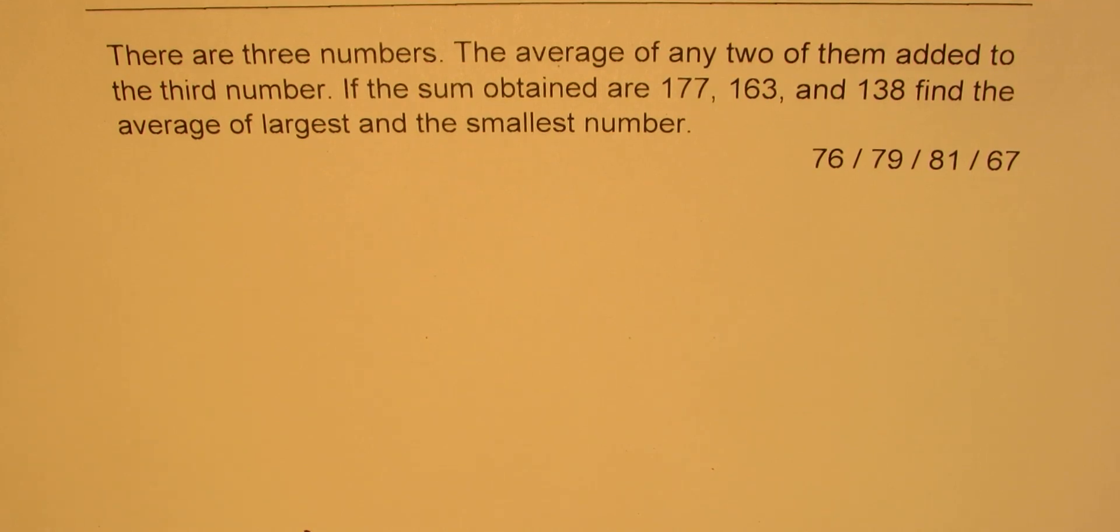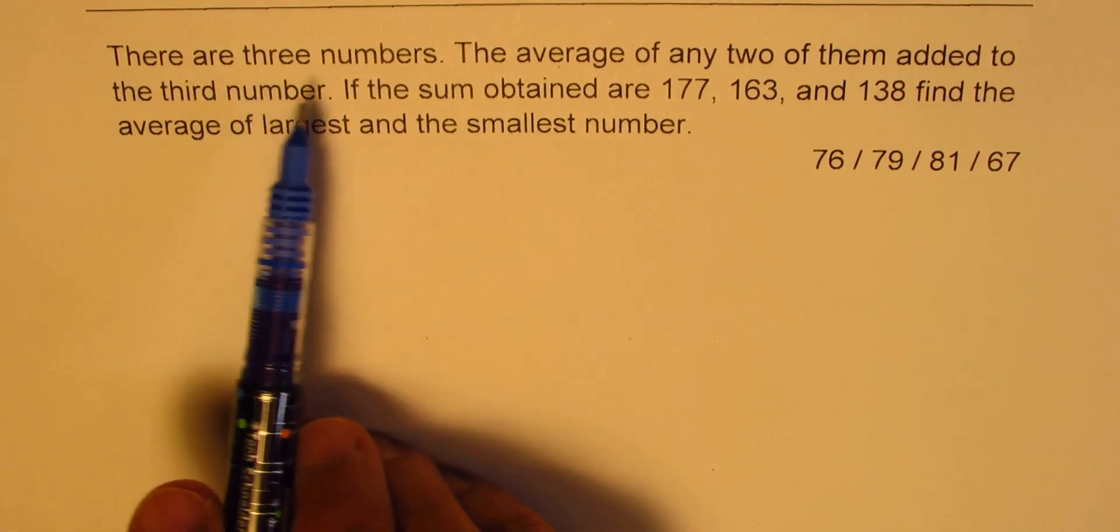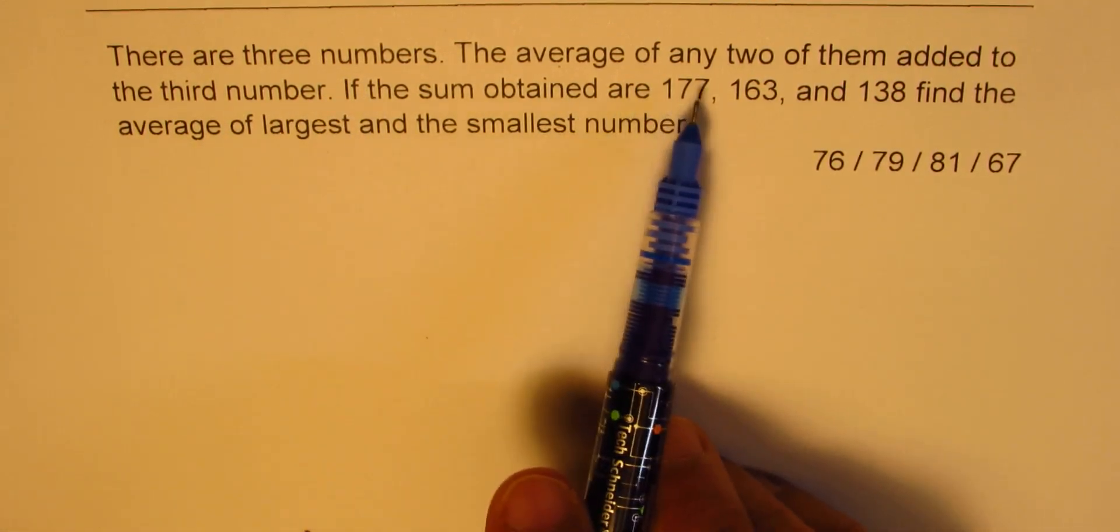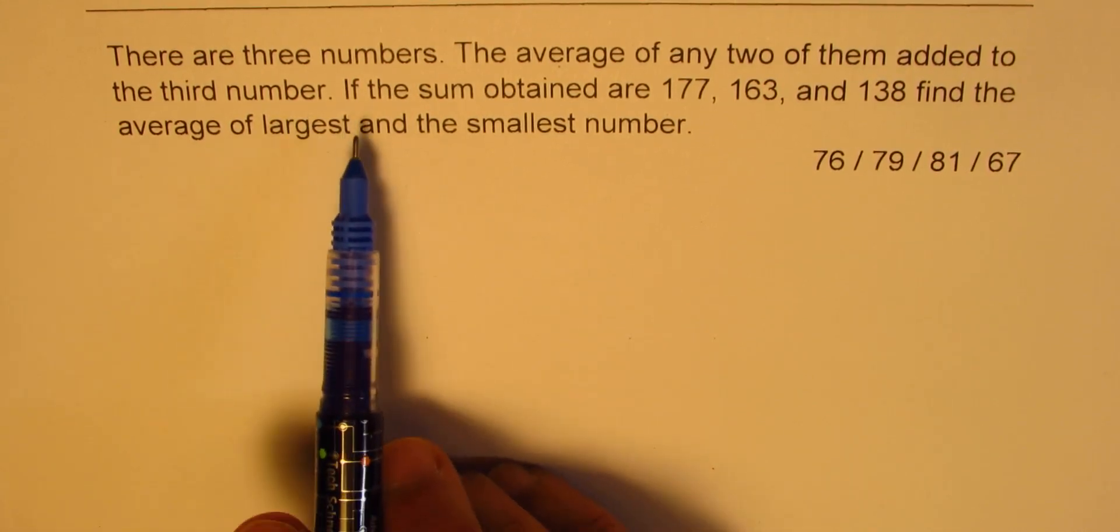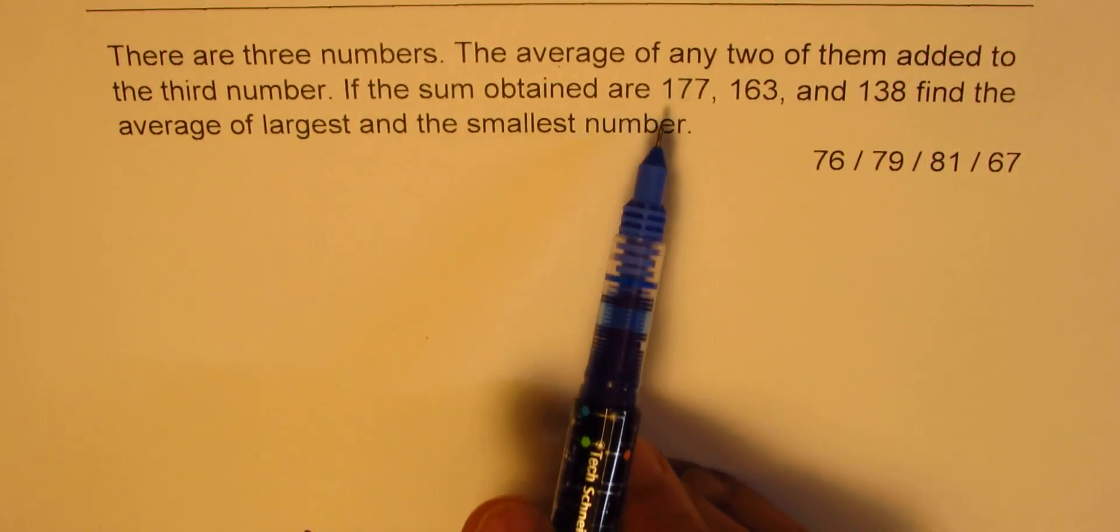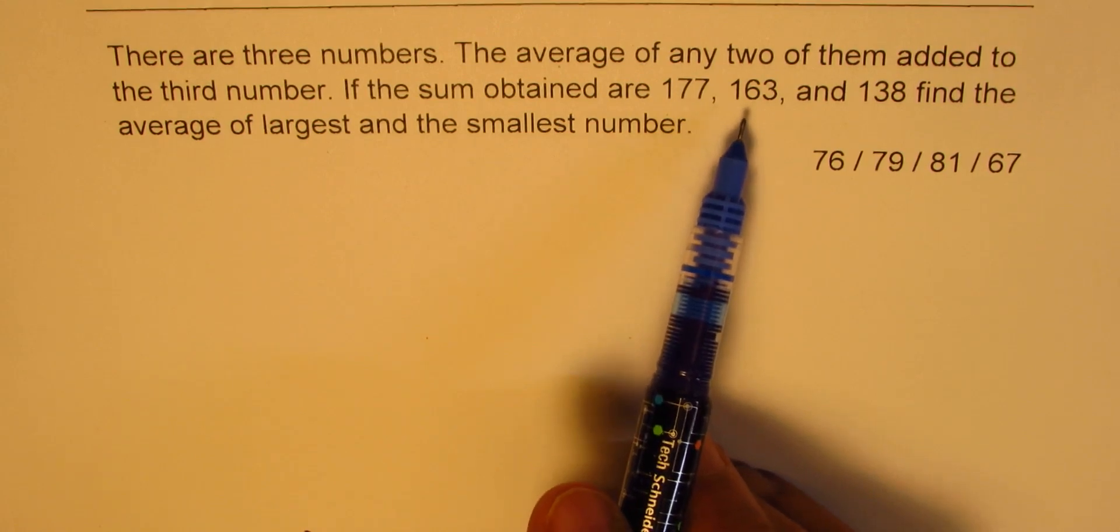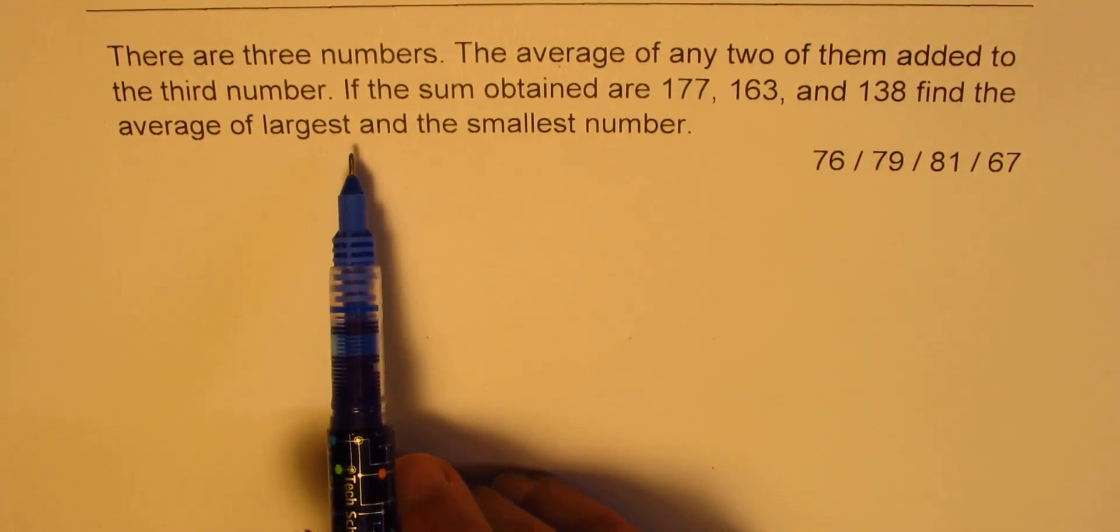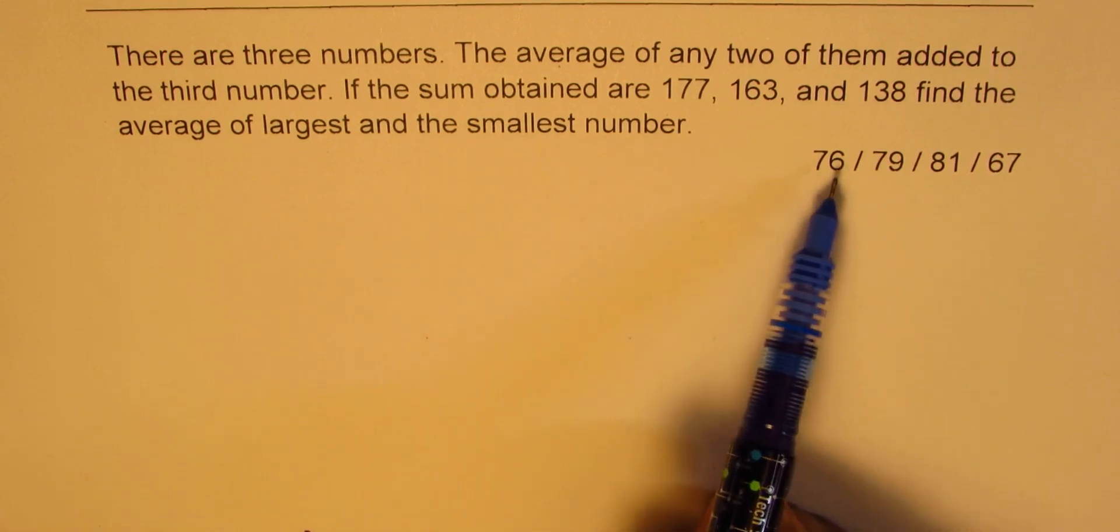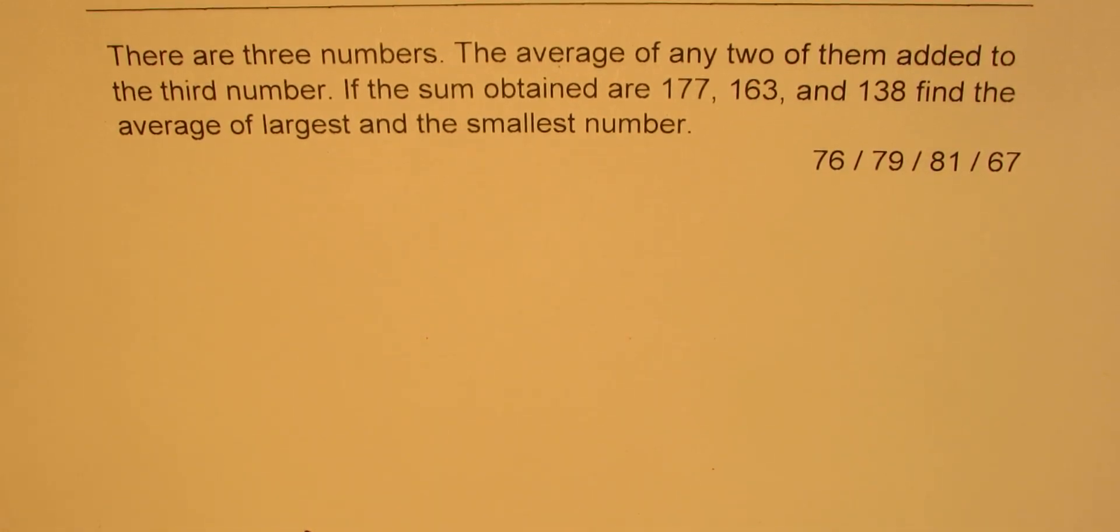Here is this excellent question: There are three numbers. The average of any two of them added to the third number - if the sum obtained are 177, 163, and 138, find the average of largest and smallest number. Four choices are given to you.